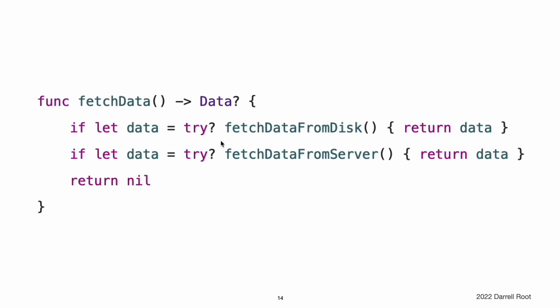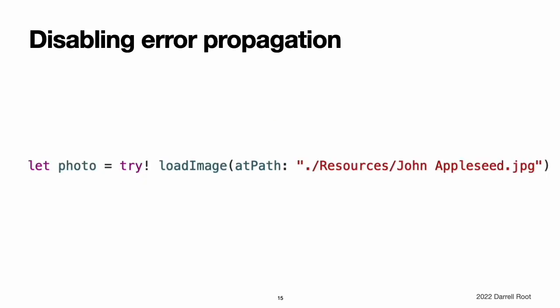For example, this code uses several approaches to fetch data or returns nil if all of the approaches fail. Disabling Error Propagation. Sometimes you know a throwing function or method will not, in fact, throw an error at runtime. On those occasions, you can write try! before the expression to disable error propagation and wrap the call in a runtime assertion that no error will be thrown. If an error actually is thrown, you will get a runtime error.